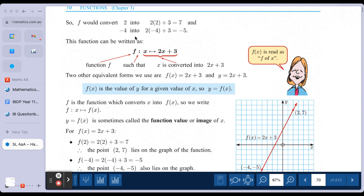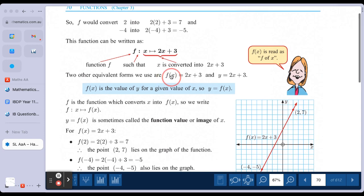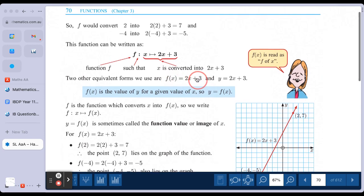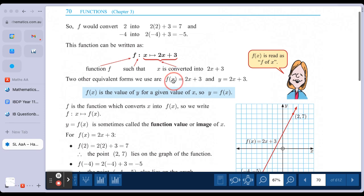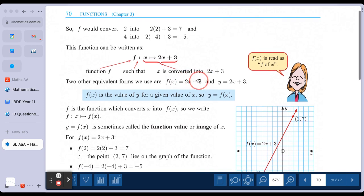But this is also another notation where we say the function is defined such that x, the input, goes to 2x plus 3. That's the rule. So x to the rule. And then this is the notation you're probably more familiar with. f of x equals 2x plus 3. So that means we can sort of see this as f has an input of x. And the output is the rule double the input and add 3.